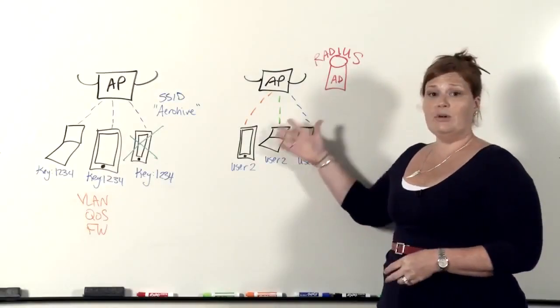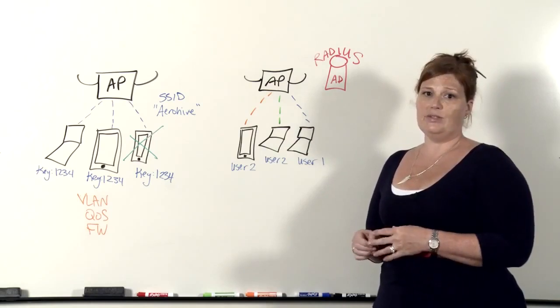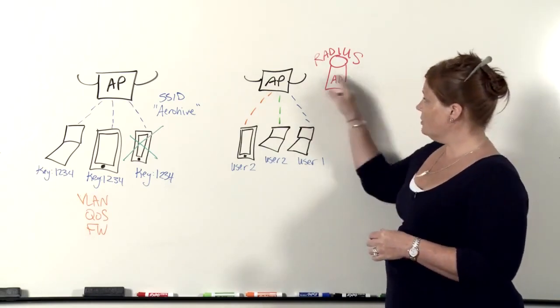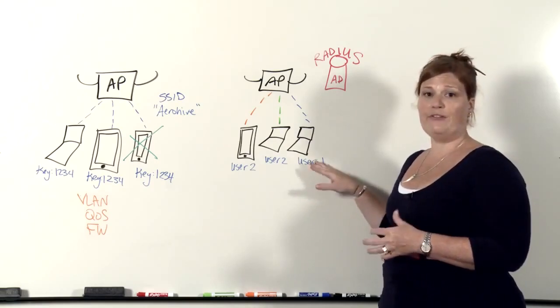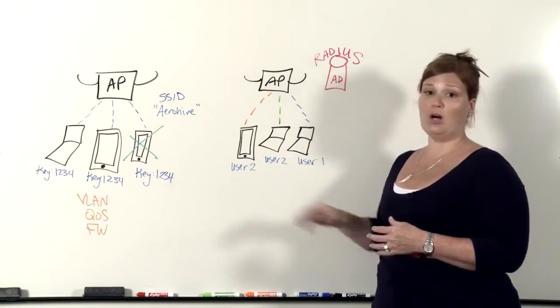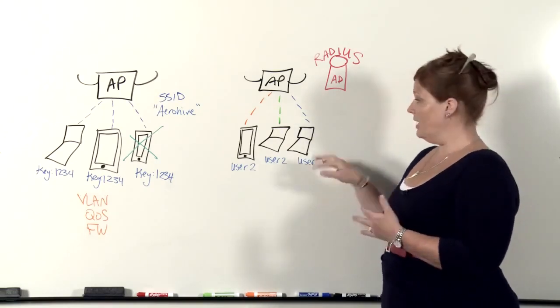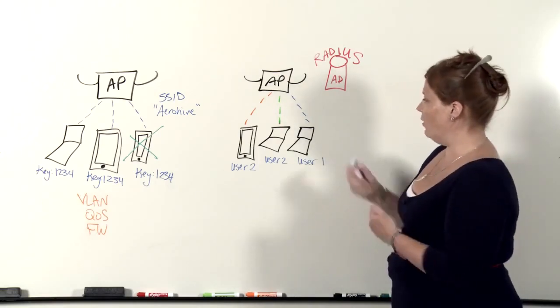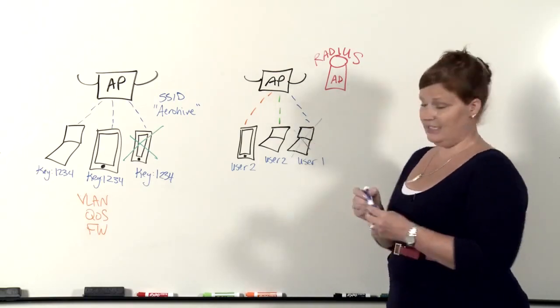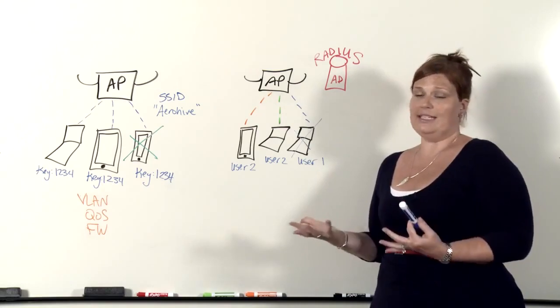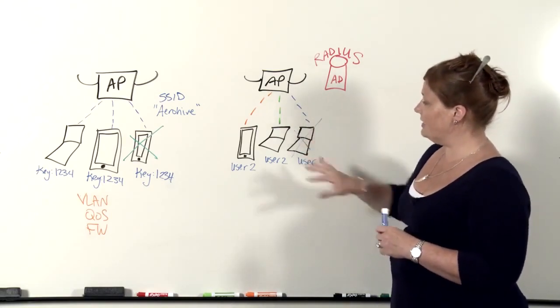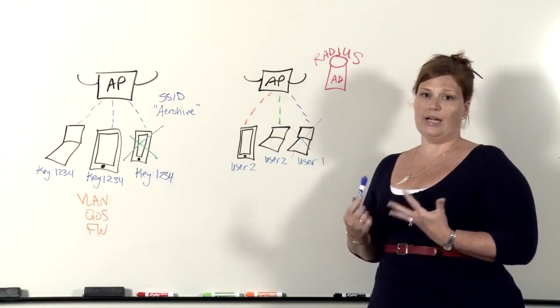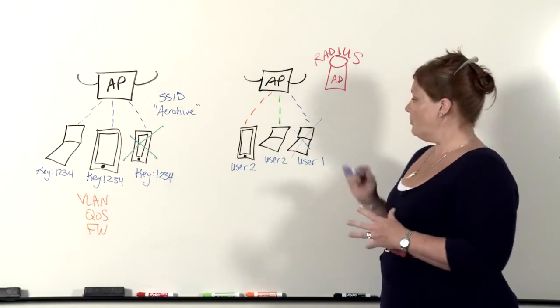Now this is clearly the most secure way to connect your devices to the network because each user negotiates that individual key, and therefore we can distinguish them from their fellow users. So we can assign different policies to them, we can de-authenticate a single client. Again, if one user happens to leave the company or leave for the day after visiting, you can just de-authenticate this single client and the other users continue to work as normal.